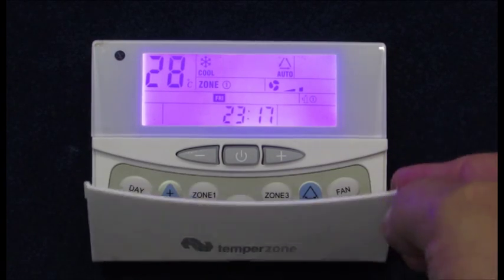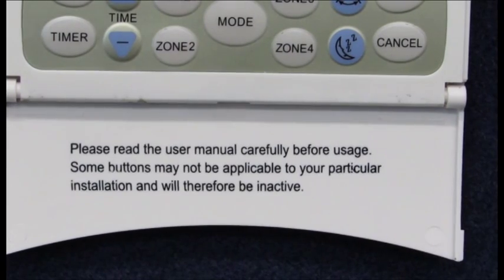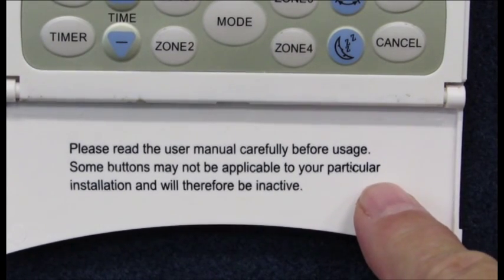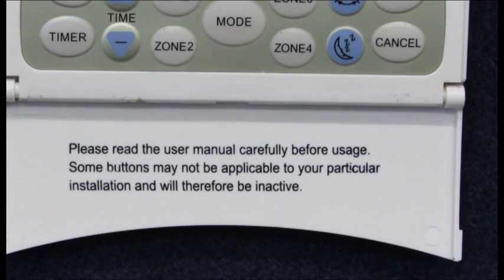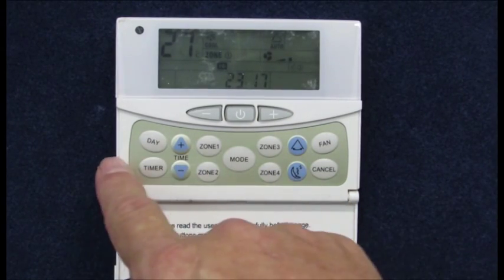Now let's see what we find when we drop the front flap. This exposes a number of other buttons that we can use in setting up the controller. It does say here to read the user manual before use, which is a really good idea, although I will cover a fair amount of this in this video. It does also say that some of these buttons you see here may not be applicable in your installation.